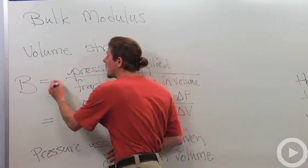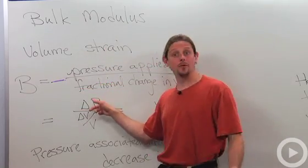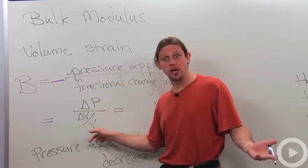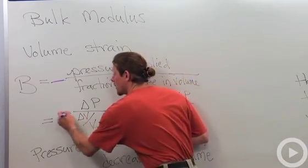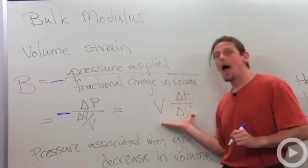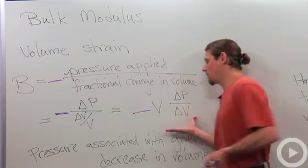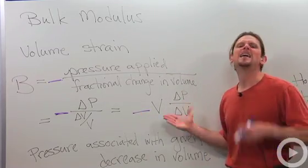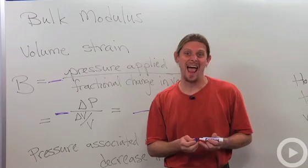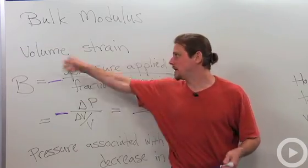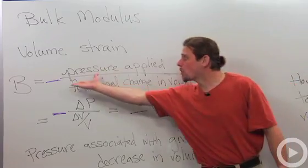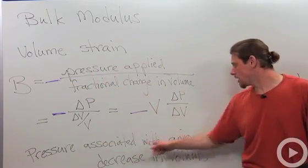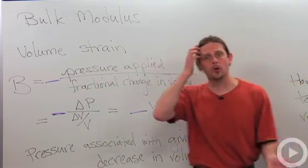So we'll give ourselves this minus sign here, and then we'll write down delta P over fractional change in volume—that's the change in volume over the volume, giving ourselves a minus sign again—and then over here we'll write it in the way that you'll usually see it in the books. Now sometimes this is called K instead of B, but I like B so I'm going to use B. So this bulk modulus is the pressure that's associated with a given decrease in volume.